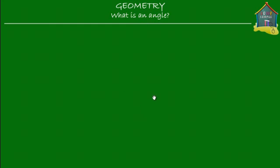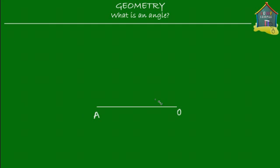To find out what an angle is, I'm going to draw a straight line like this. Let's call it OA. Then I'm going to draw another line on top of it that starts at O and is right on top of OA.